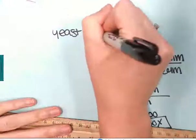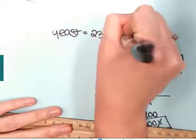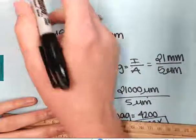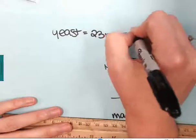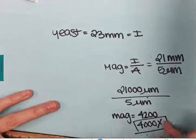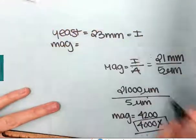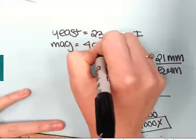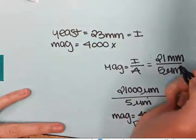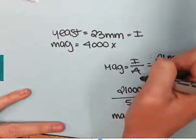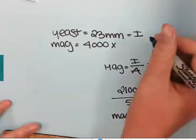The yeast is approximately 23 millimeters, so I'm measuring it from the picture, so that is going to be equal to my image. I know my magnification is 4,000x. I want to know the actual.